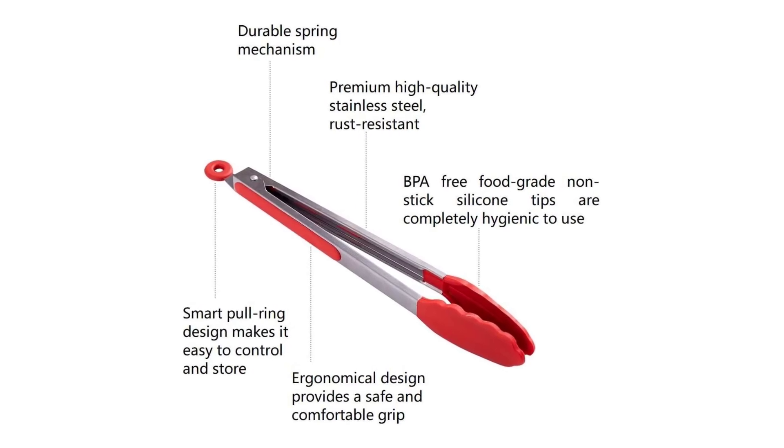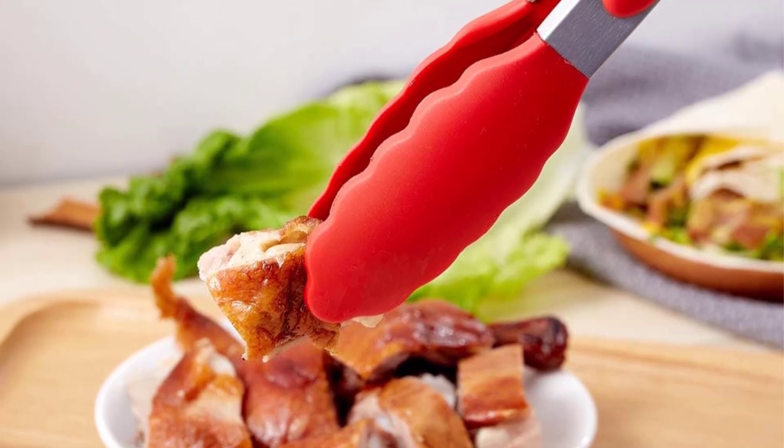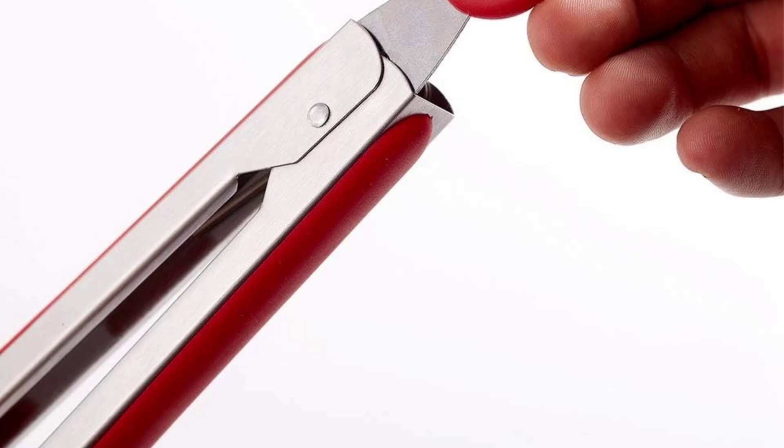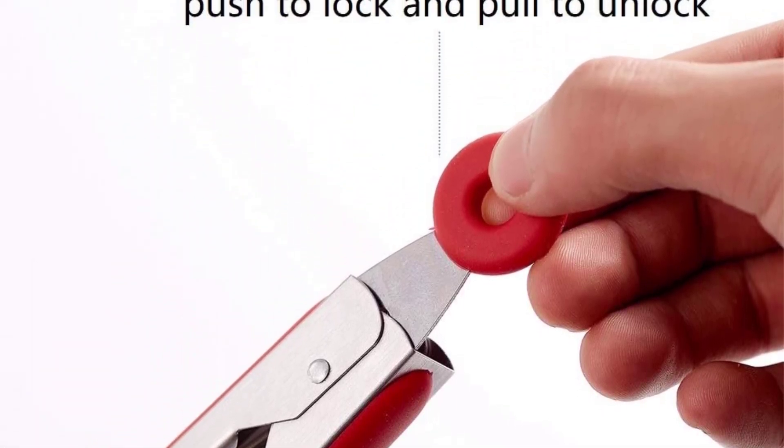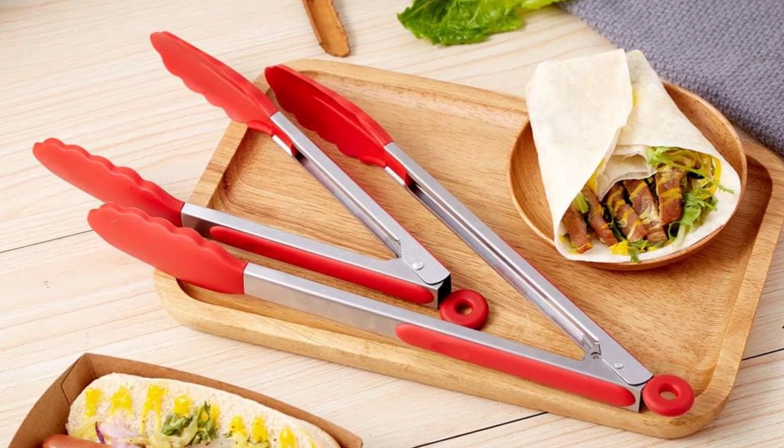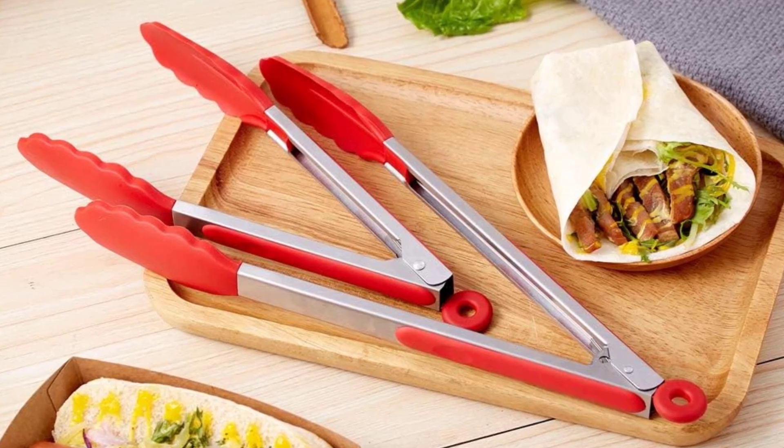The BPA-free, food-grade non-stick silicone tips are completely hygienic to use and won't scratch your non-stick cookware. These versatile tongs are heat-resistant up to 480 degrees Fahrenheit, perfect for grilling, barbecue turning, cooking, salad, serving, and flipping. If you're not completely satisfied, Hermware offers a hassle-free replacement or refund.